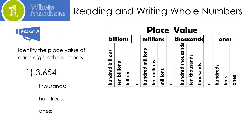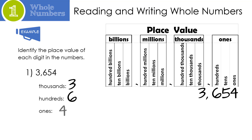The first thing we need to do is identify the place value of each digit in the numbers. What I like to do is actually write the number underneath the place value. You're going to notice that my commas line up. Now all we have to do is look. What number is in the thousands? Three. What number is in the hundreds? Six. And finally, what number is in the ones? Four.